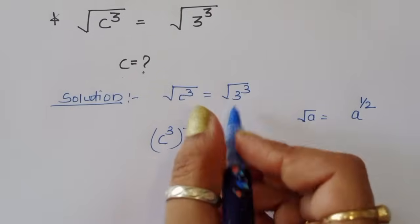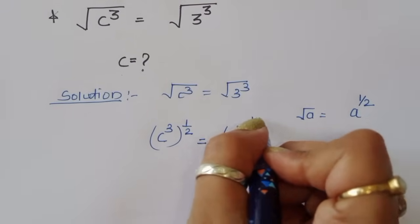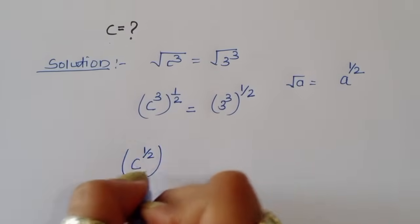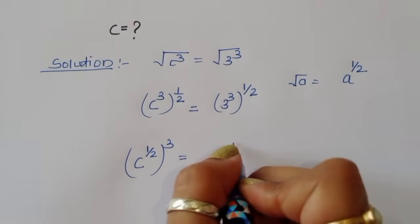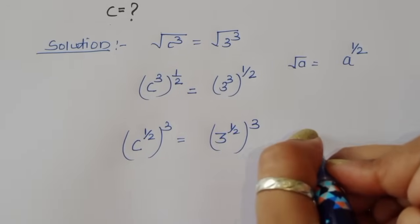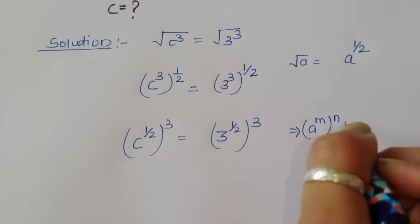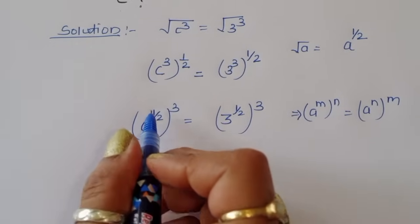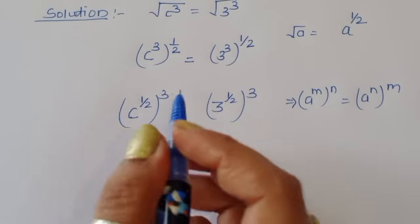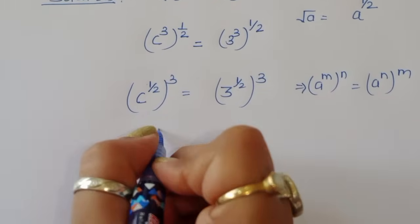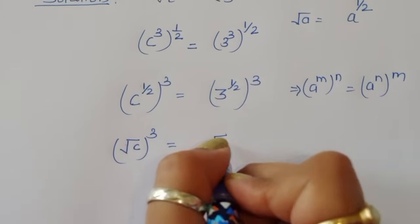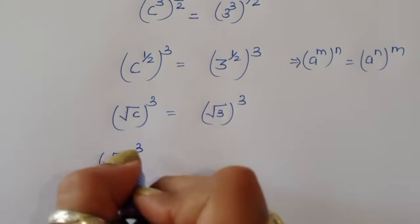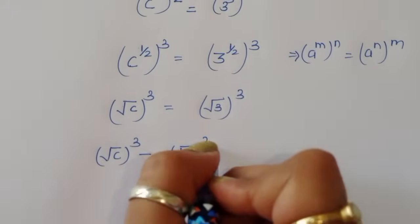Similarly, 3 cubed to the power 1/2. Now, c to the power 1/2, power 3 is equal to 3 to the power 1/2, power 3. Using the formula a power m power n equals a power n power m, this becomes square root of c, power 3 equals square root of 3, power 3. So square root of c cubed minus square root of 3 cubed equals 0.